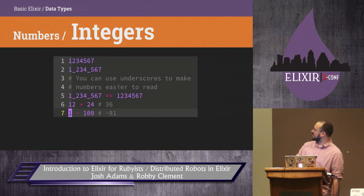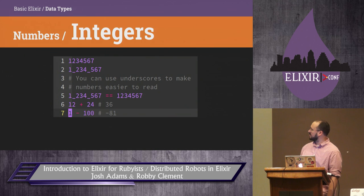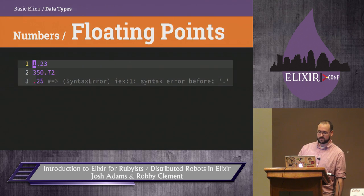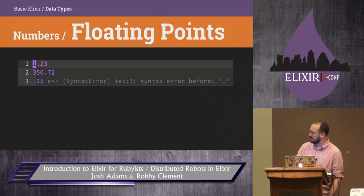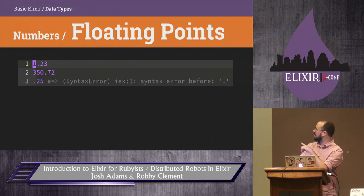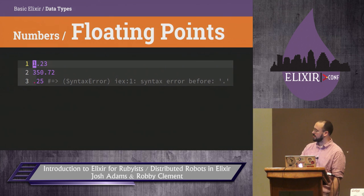Integers can be written in various ways. If you're coming from Ruby, you can still use underscores so that your numbers are readable. Floating points — they're numbers with a decimal point, nothing really big there. Just like Ruby though, you have to have a zero in front of them for it to know that it's a floating point.